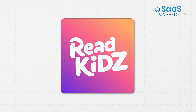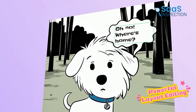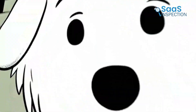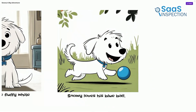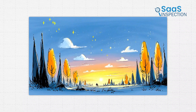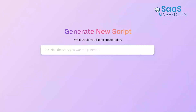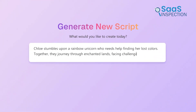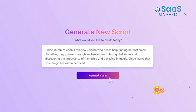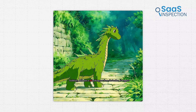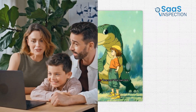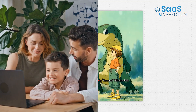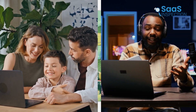ReadKids changes this scenario entirely. It's an AI platform that maintains consistent character designs, creates your storyboard instantly, and adds lifelike voices to your story. You can begin with a simple idea and turn it into a complete animated piece in just a short amount of time, which is very helpful for parents, educators, and creators alike.